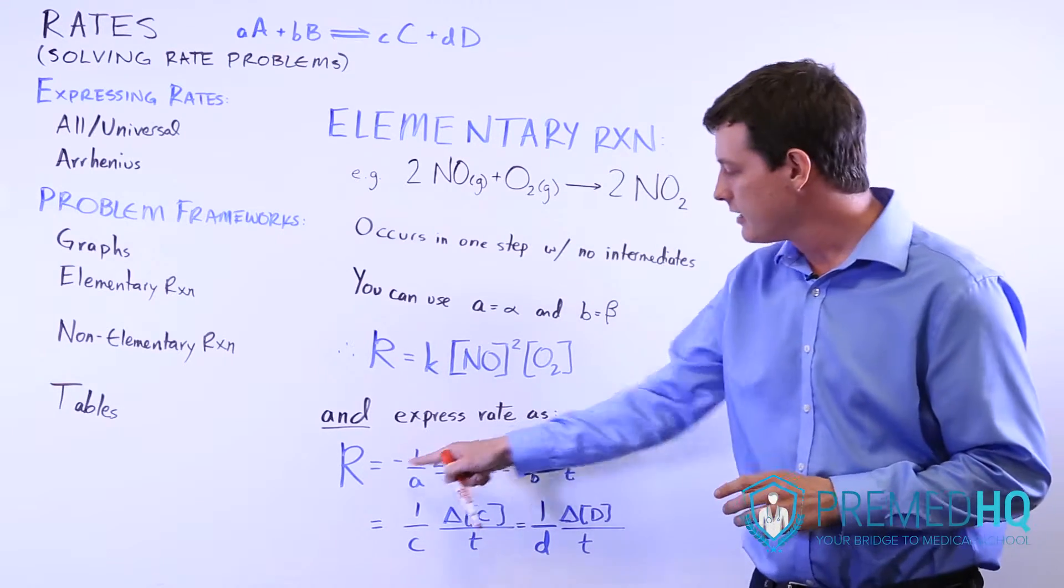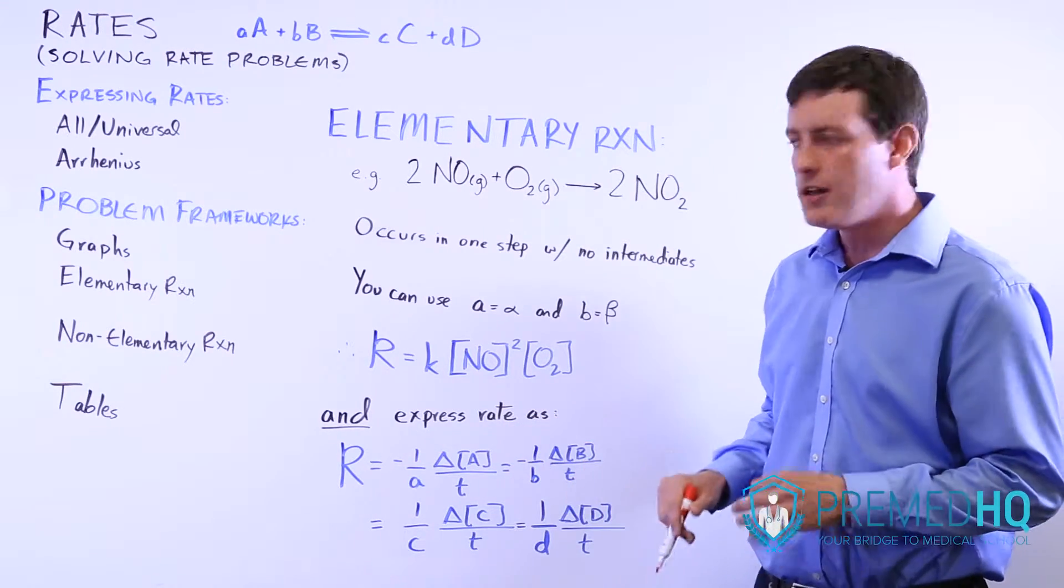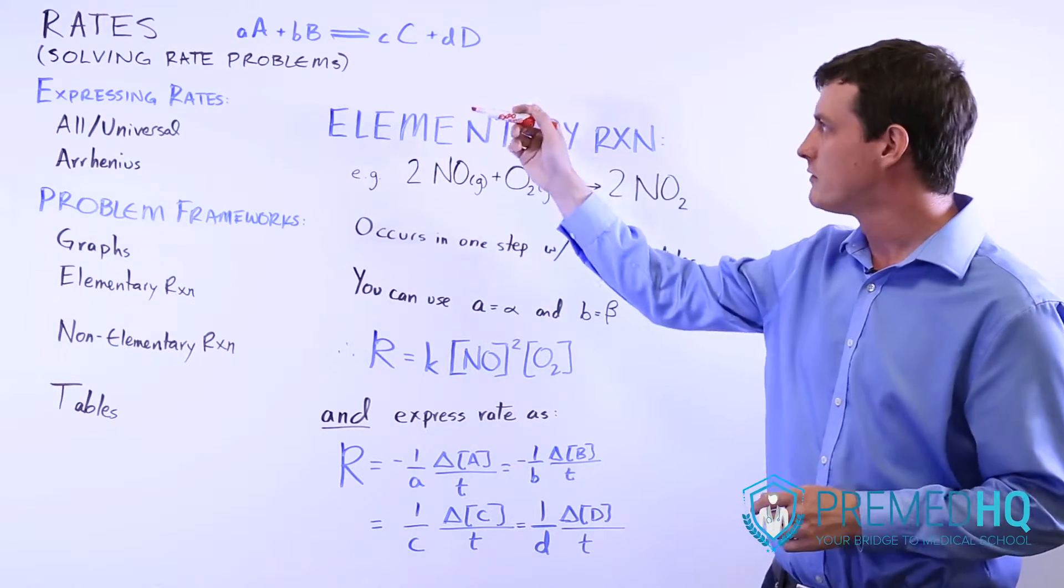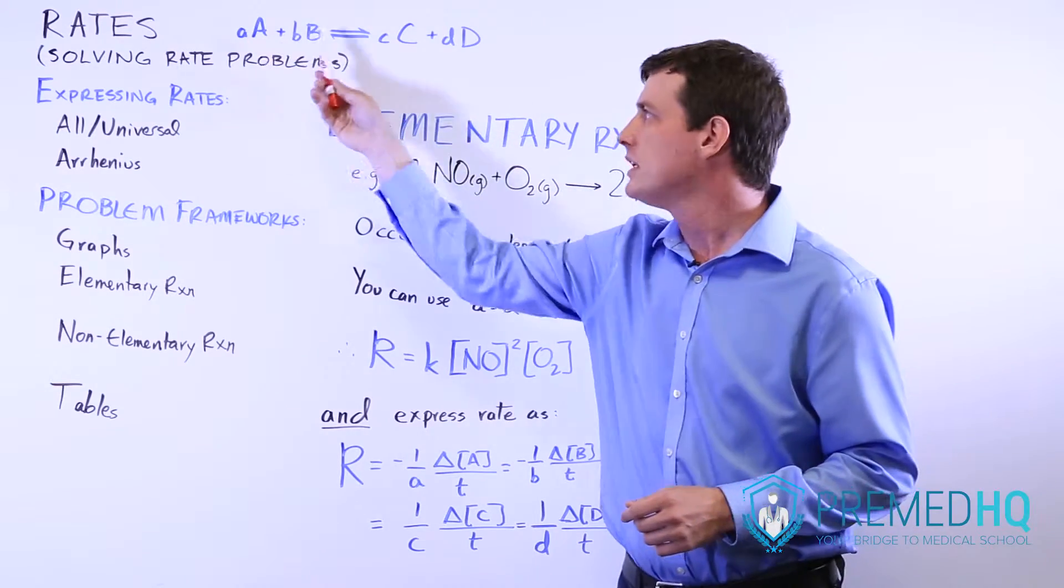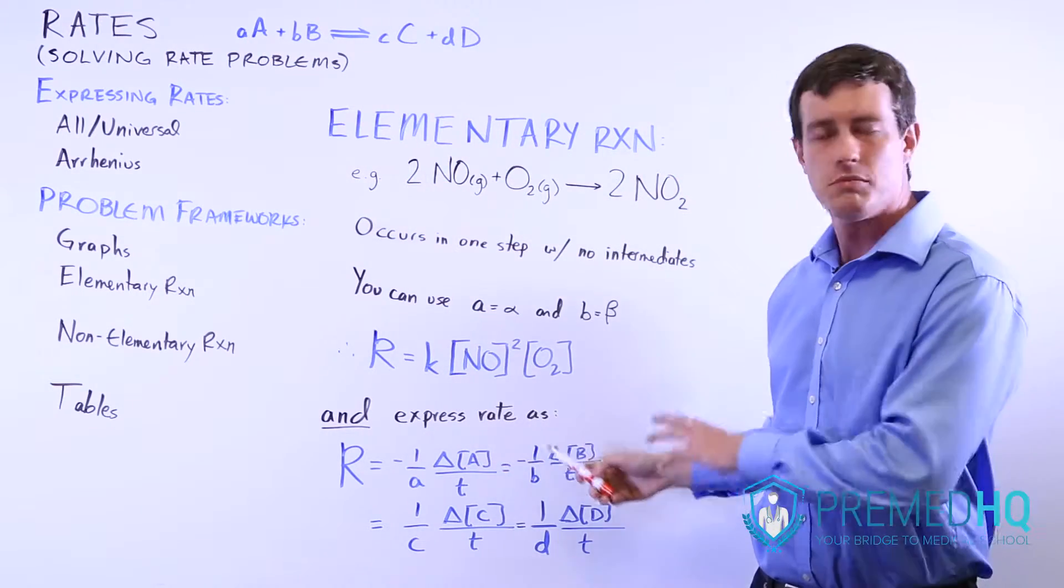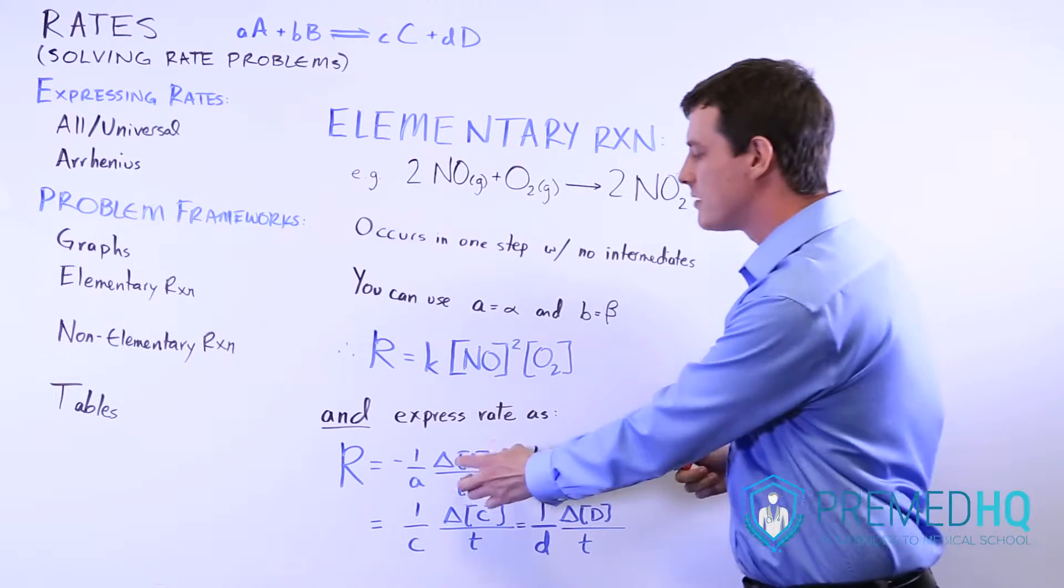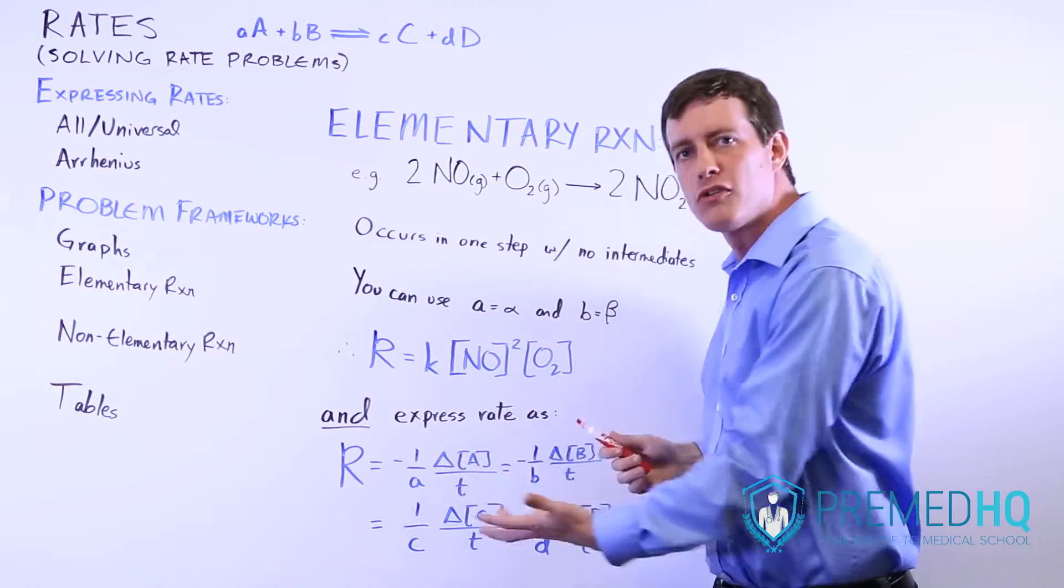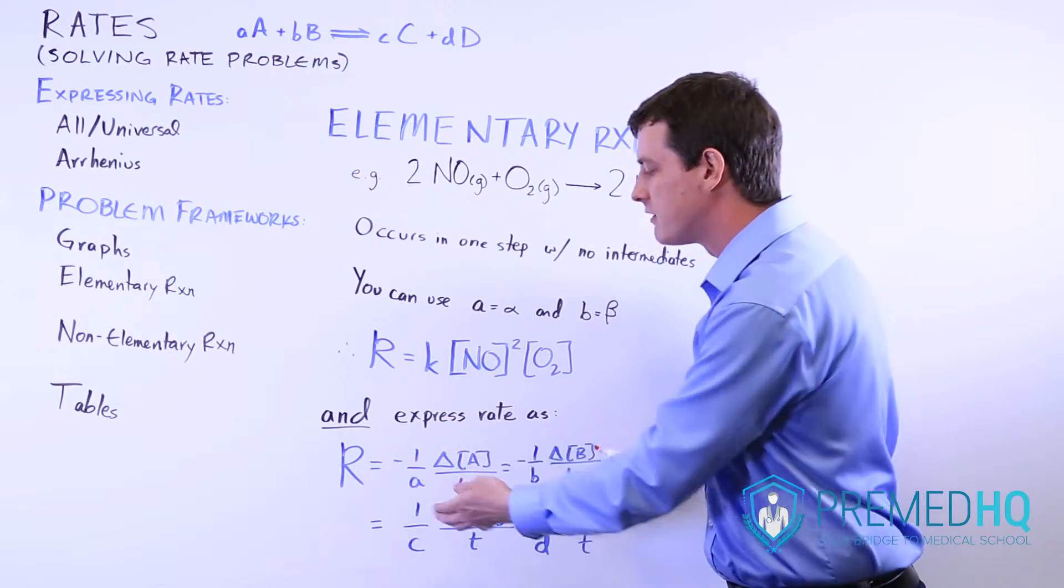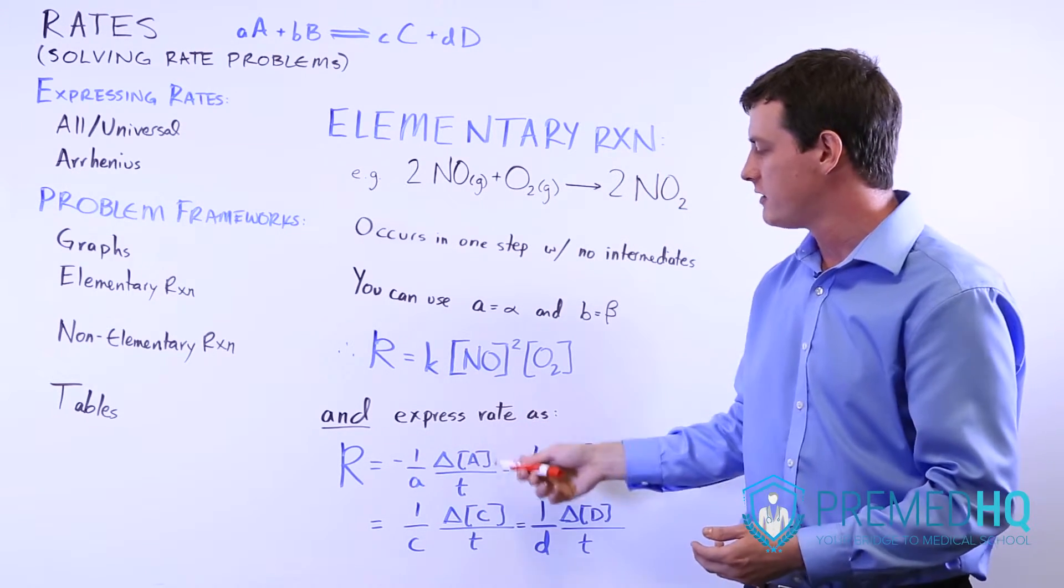Notice that you use negative values here and here because as this reaction moves forward, you're going to be depleting A. The change in A will be negative even if the rate is positive. If this number is negative, you need a negative sign over there to end up with a positive rate, despite the change of A being negative.